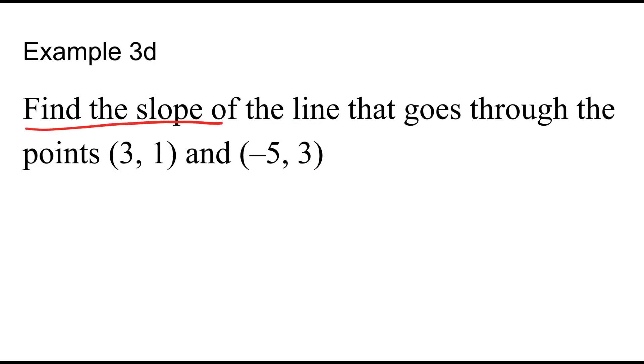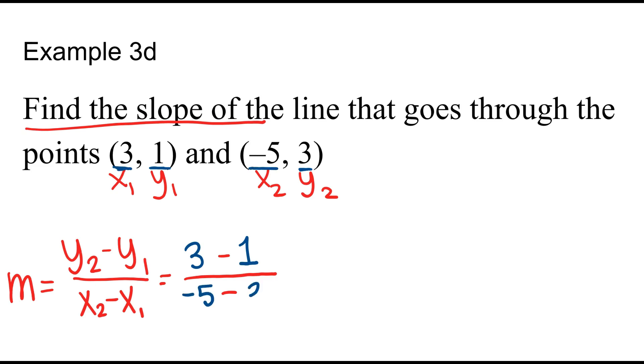Last one together. We're finding the slope of the line that goes through the points. We've got xy, xy, first ordered pair, second ordered pair. Always starting with that formula. y2 minus y1 over x2 minus x1. Always doing that fraction bar and those subtraction symbols first. y2 is 3. y2 is 3. y1 is 1. x2 is negative 5. x1 is 3.